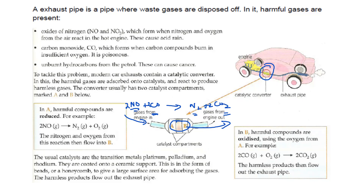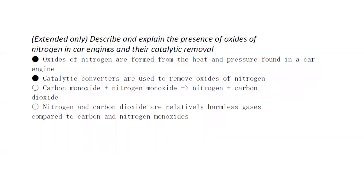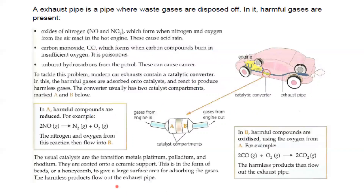Oxides of nitrogen are formed from the heat and pressure inside the engine. The catalytic converter is used to remove these oxides of nitrogen and carbon monoxide. Carbon monoxide plus oxides of nitrogen give nitrogen and carbon dioxide, which are relatively less harmful gases compared to carbon monoxide and nitrogen monoxides. This is how the catalytic converter reduces harmful emissions from the car engine.